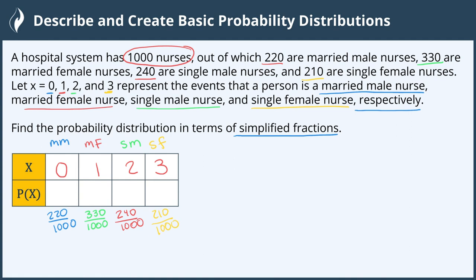Let's simplify each of these fractions. 220/1000 simplifies to 11/50. 330/1000 simplifies to 33/100. 240/1000 simplifies to 6/25. And 210/1000 reduces to 21/100.